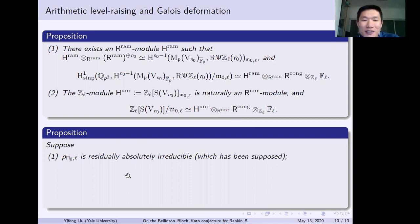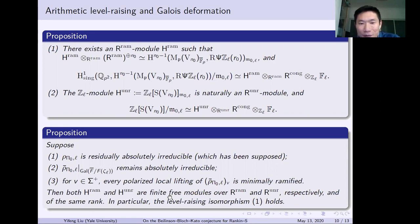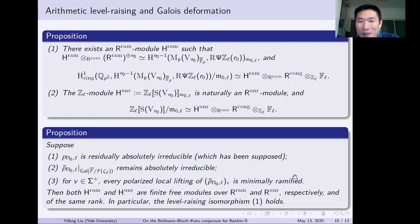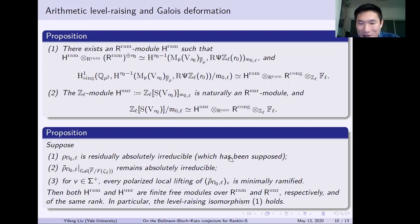And this is indeed the case. Suppose the Galois representation is residually absolutely irreducible, which holds for l sufficiently large by our condition; that its base change to F(zeta_l) remains absolutely irreducible (a Taylor-Wiles condition); and that for v in Sigma-plus, every polarized local lifting of the local Galois representation is minimally ramified. Then both R-ram and R-n are finite free modules over R-ram and R-n respectively, of the same rank. Through this proposition we obtain the level raising isomorphism. I will not explain the minimally ramified condition in detail as time does not permit — it involves substantial Galois deformation theory.